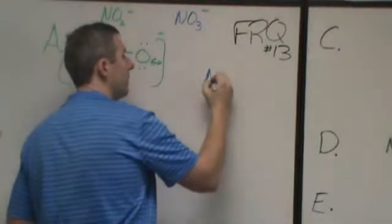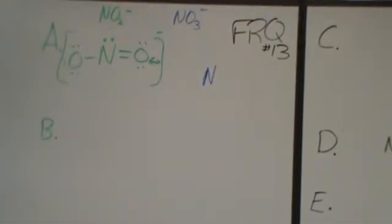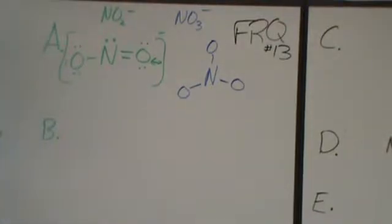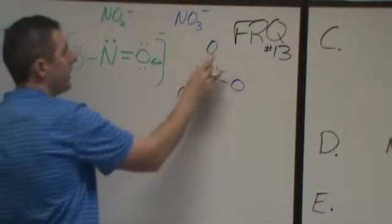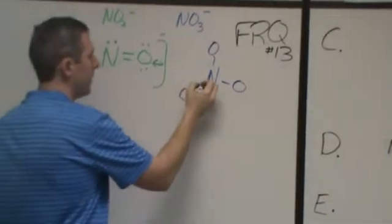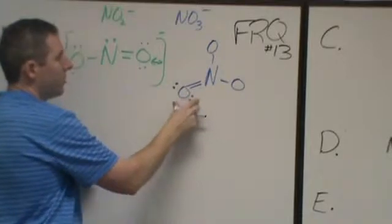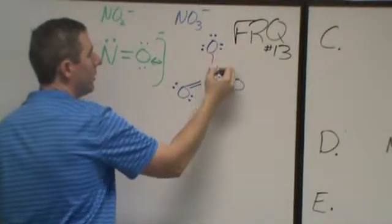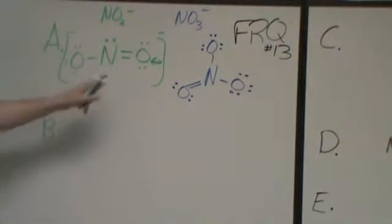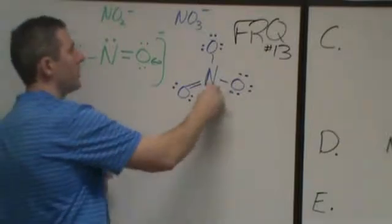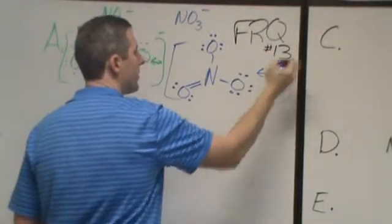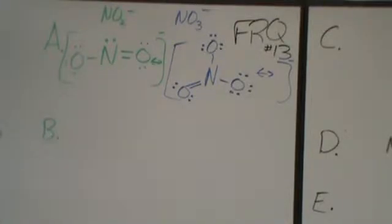For nitrate, I again place nitrogen in the center surrounded by three oxygens. If I put single bonds on each oxygen, I get negative one formal charges everywhere — so I'll need at least one double bond. Adding a double bond gives a formal charge of zero on that oxygen, minus one on each of the other two oxygens, and plus one on the nitrogen. That plus one cancels one of the minus ones, giving a total formal charge of minus one, equal to the ion's charge. This structure will also resonate, so we draw resonance structures with a negative one charge on each.